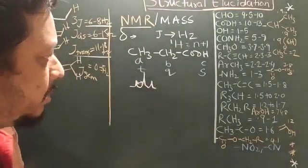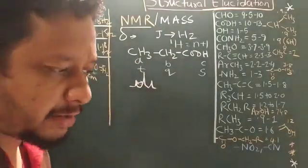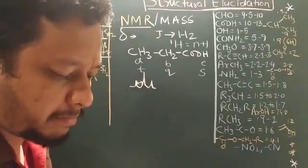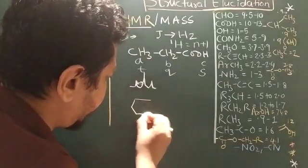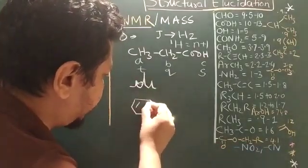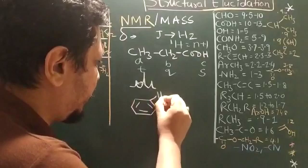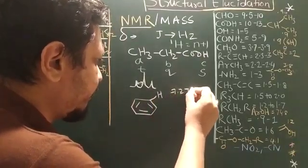This plays very important characteristic role to determine organic compounds. Now, for example, you have a benzene, right? The benzene, the chemical shift of benzene usually is 7.27 ppm.